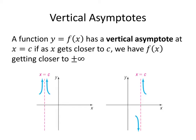A function has a vertical asymptote if, as your x value gets closer and closer to a number c — where c is the position of the purple dotted line — your function value is either getting really big and going off to infinity, or getting really big in the negative direction and going off to negative infinity.